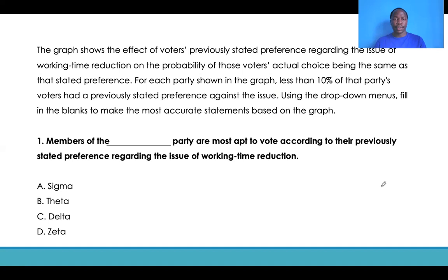The graph shows the effect of voters' previously stated preference regarding the issue of work time reduction and the probability of those voters' actual choice being the same as that stated preference. For each party shown in the graph, less than 10% of that party's voters have a previously stated preference against the issue. Using the drop-down menus, fill in the blanks to make the most accurate statements based on the graph.